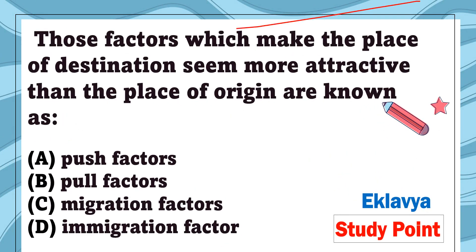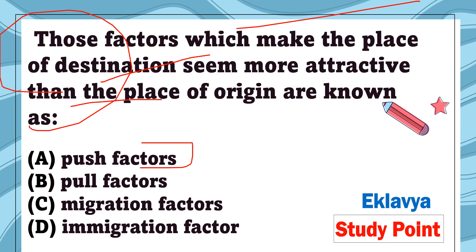Question 6: Those factors which make the place of destination seem more attractive than the place of origin are known as — option A: push factors, option B: pull factors, option C: migration factors, option D: immigration factors. The correct answer is pull factors. The destination seems more attractive because of more facilities, so people are pulled toward it — hence pull factors.